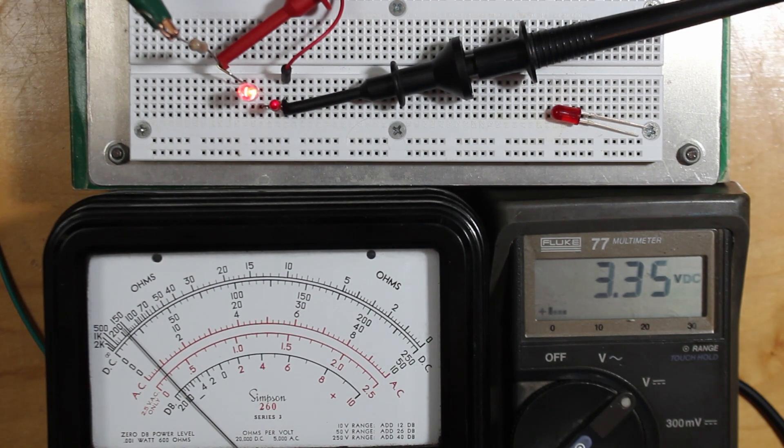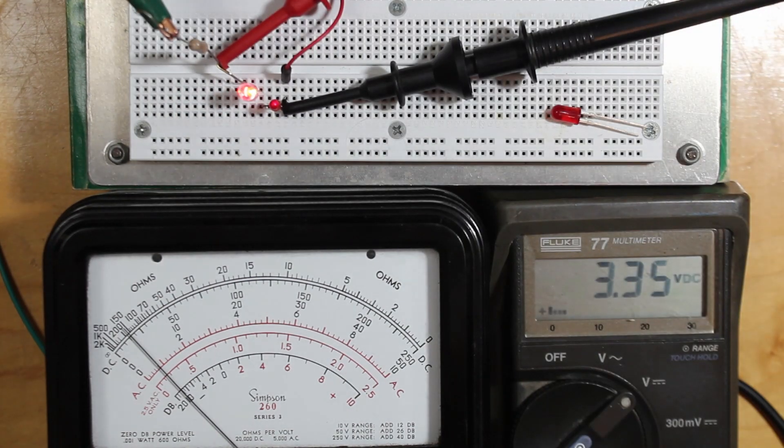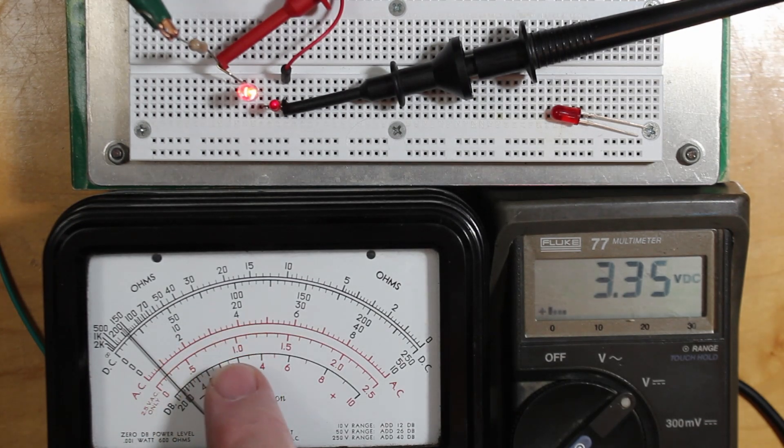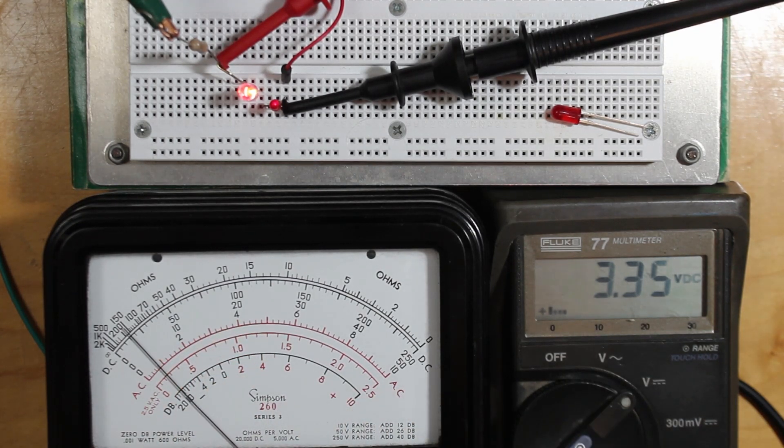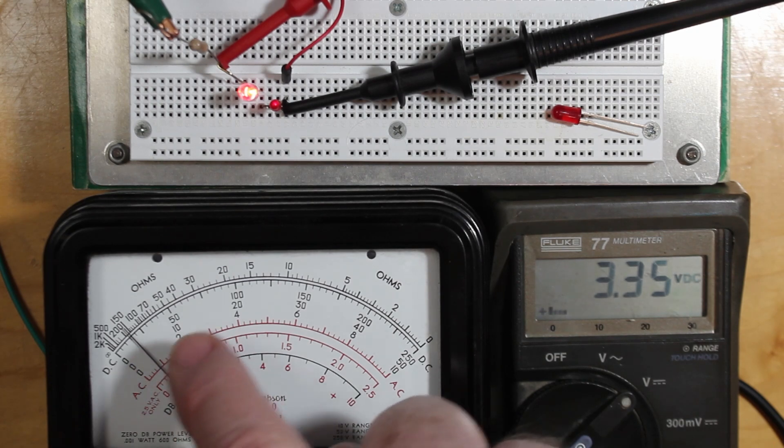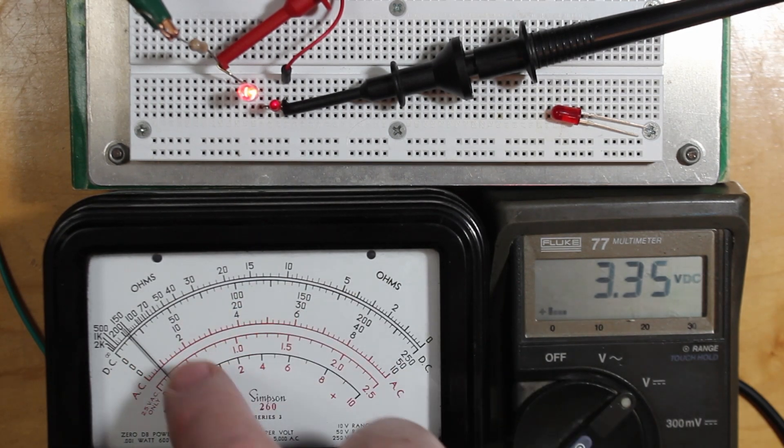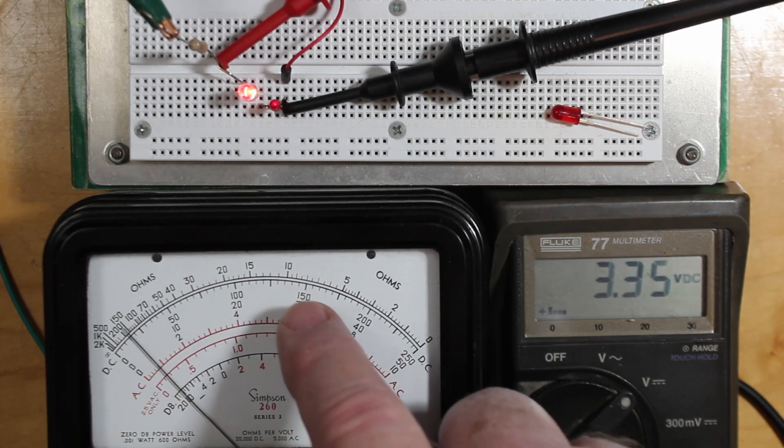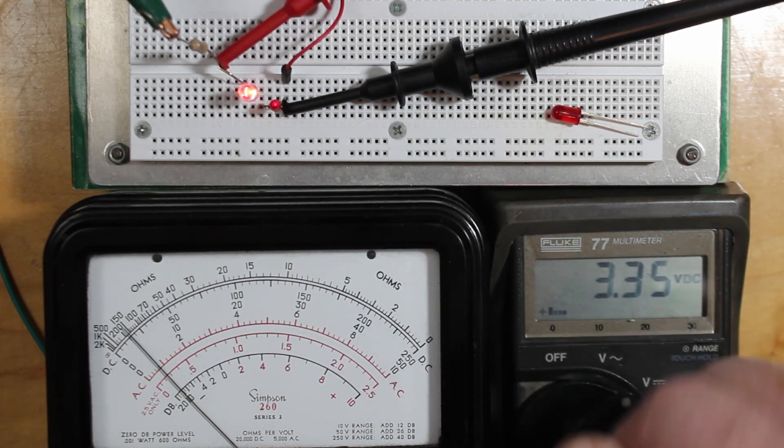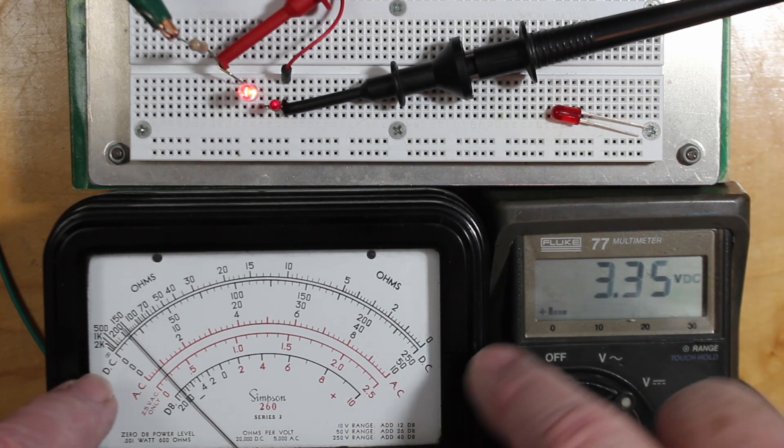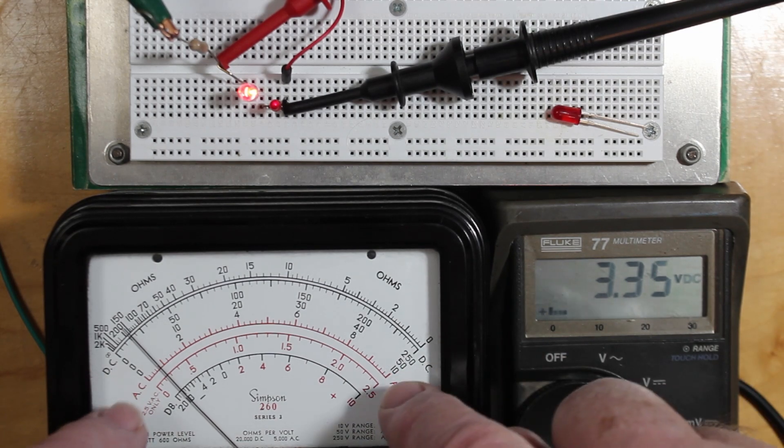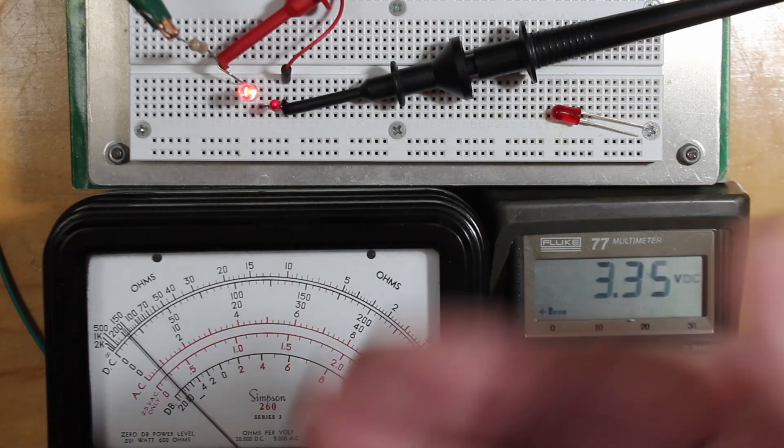Right now on our meter here, we're on the 10 milliamp scale, so that's zero, two, four, six, eight milliamps up to 10 milliamps full scale. The red scale is actually the AC scale, but you'd use the black one. They're so close for this purpose it doesn't really make much of a difference.